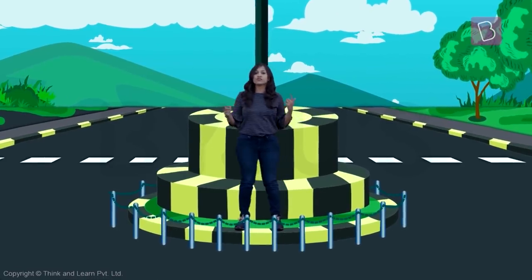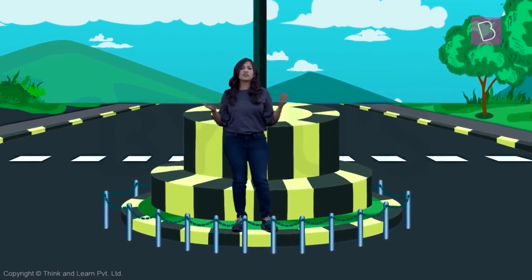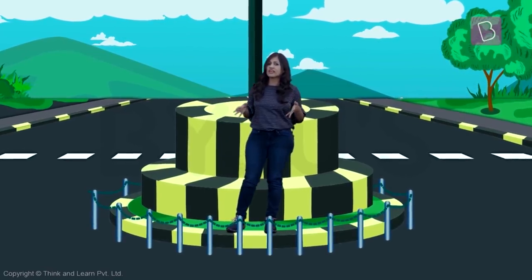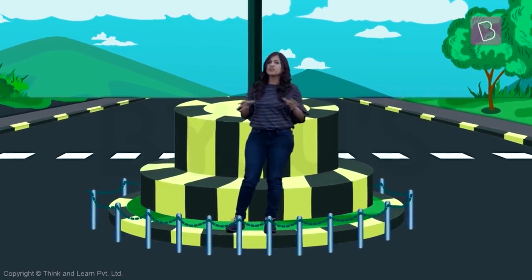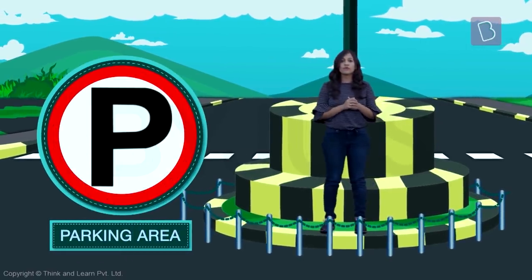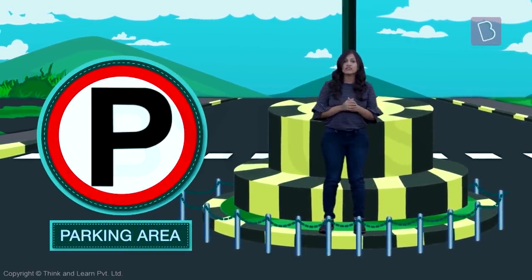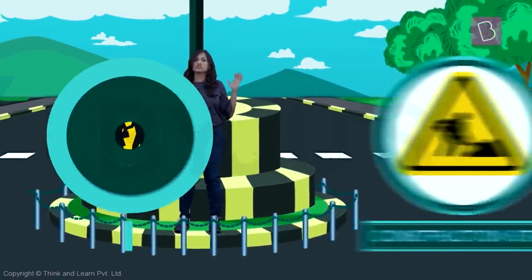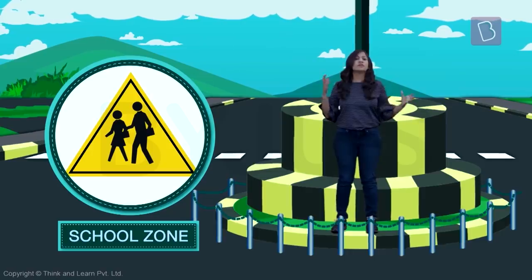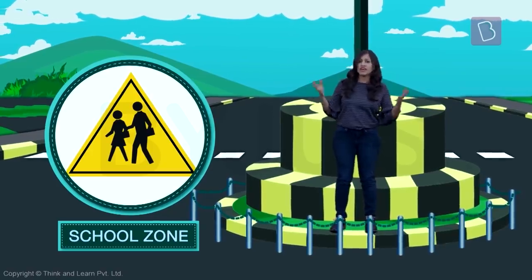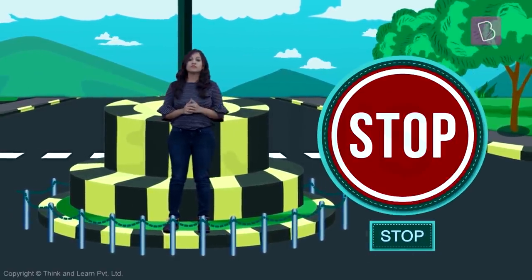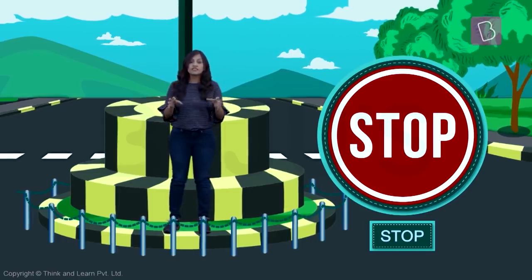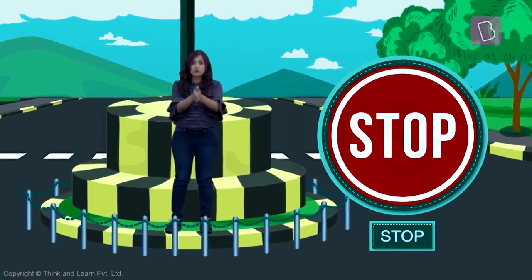Since no one has time to read long sentences on the road, symbols are super useful to quickly tell us different things — like whether it's a parking spot, whether there's construction going on, or whether there's a school nearby. There are many such symbols and signs. This one, for example, is a stop sign — it means vehicles are expected to stop at this area and not keep going.